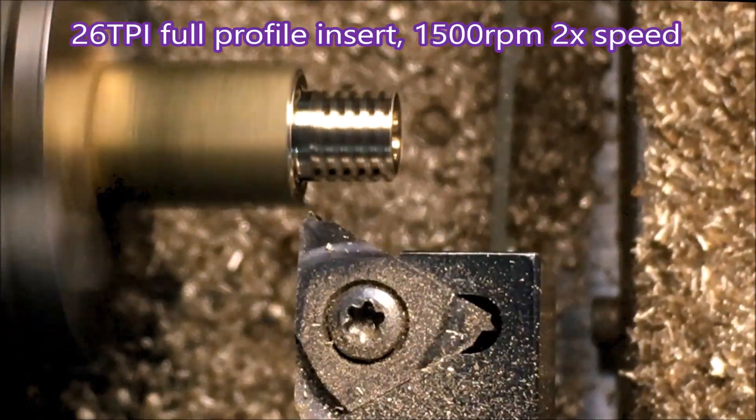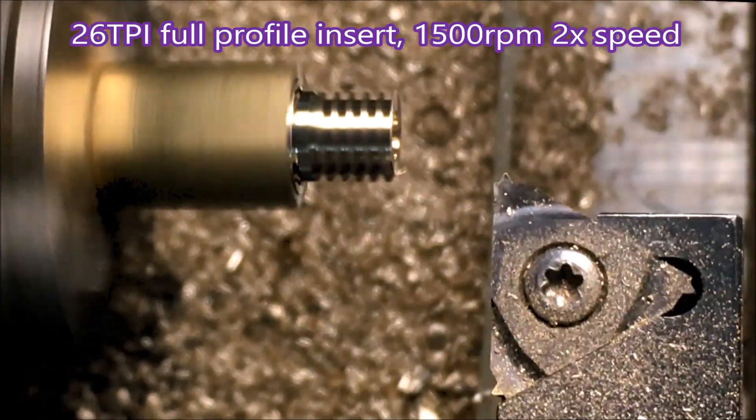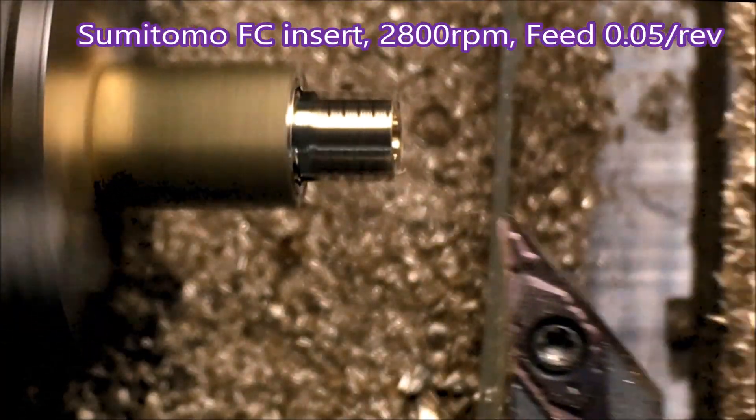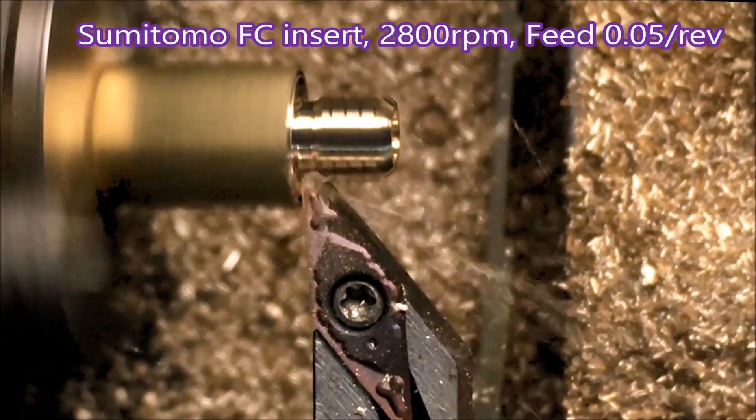Here we cut a thread. Had to drop to 1500 rpm. My lathe doesn't travel fast enough to cut the thread at 2800.